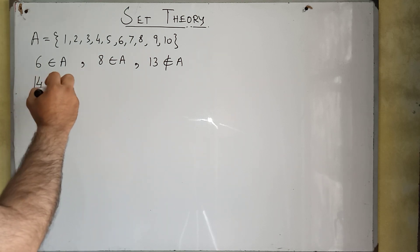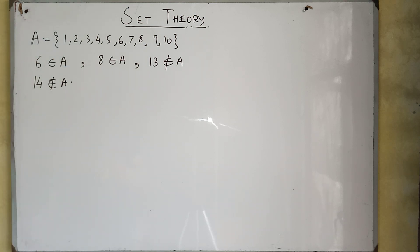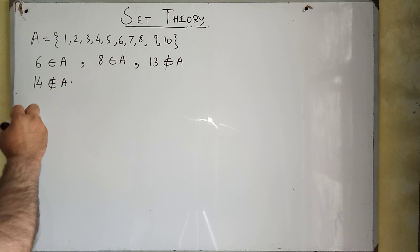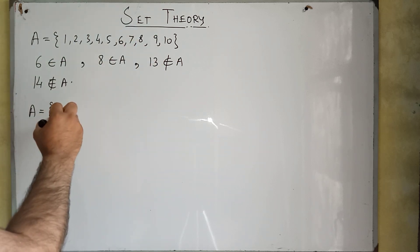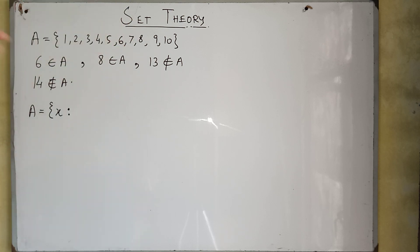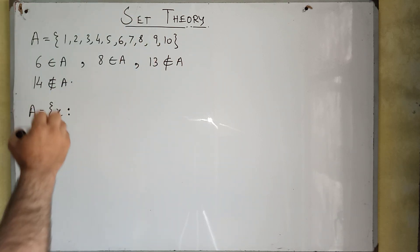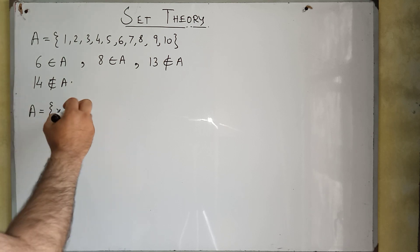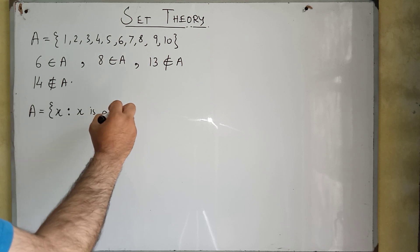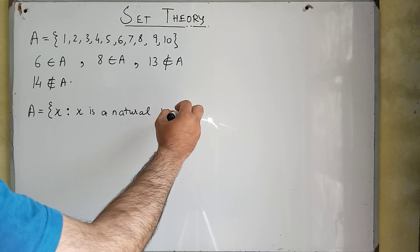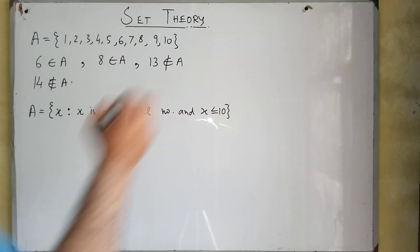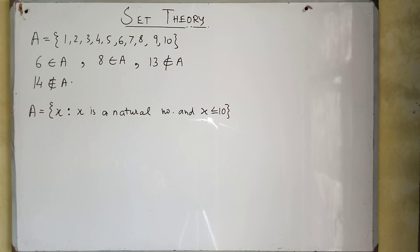Similarly, 14 does not belong to A. Now we can have some notations for writing a set. For example, this set can be written using set builder notation — we denote all elements by X and say that all elements are natural numbers. So the set is: X such that X is a natural number and X is less than or equal to 10. This gives us all natural numbers from 1 to 10.